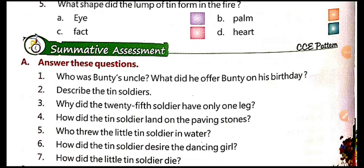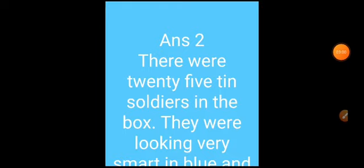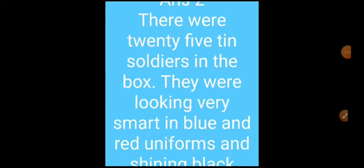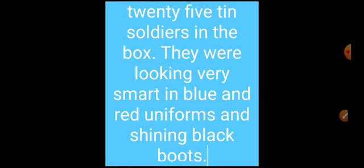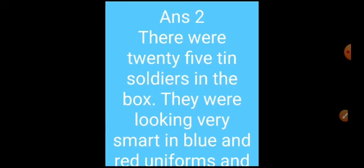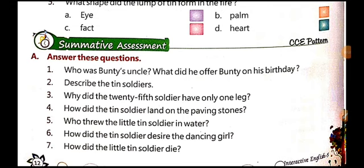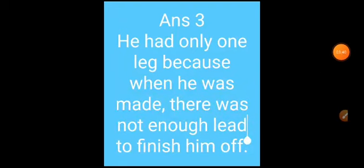Question number two: describe the tin soldiers. There were 25 tin soldiers in the box. They were looking very smart in blue and red uniforms and shining black boots. One of them had only one leg because when he was made, there was not enough lead to finish him off.